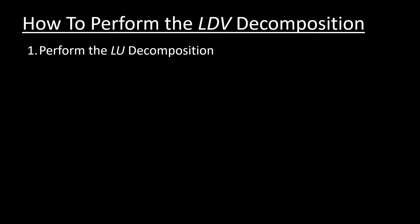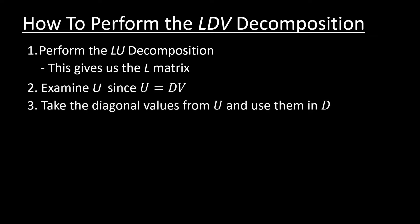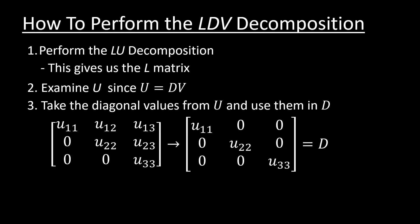That comes in when we look at how we can actually perform the LDV matrix decomposition. Step one is we perform the LU decomposition. That's because it gives us the L matrix already. We know that we can get the other two matrices from the U matrix and examine the fact that U equals DV. Then we can take the diagonal values off of the U matrix and simply just slide them right into place into the D matrix.